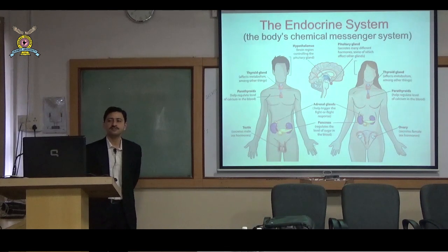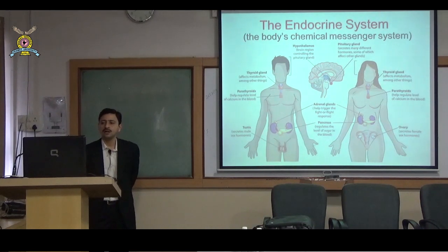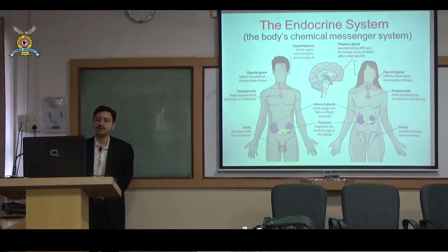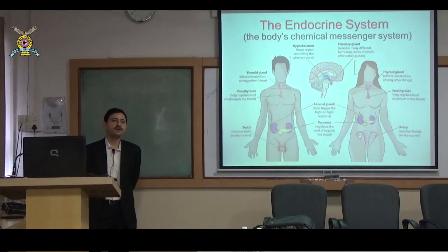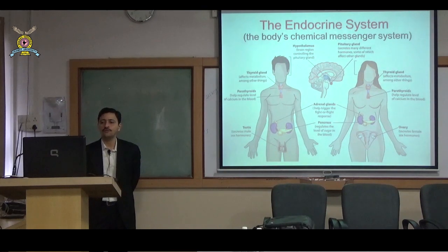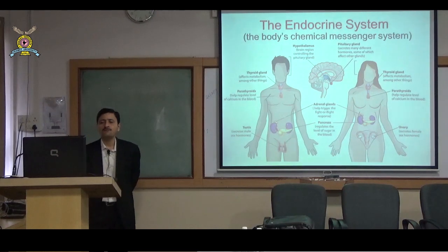The endocrine system broadly consists of the hypothalamus and the pituitary gland, located at the base of the brain. The pituitary gland secretes many different hormones and is called the master or boss of the endocrine system. It secretes hormones that regulate the function of other important endocrine glands in the body.